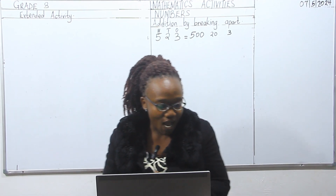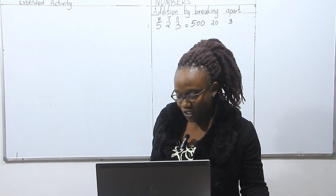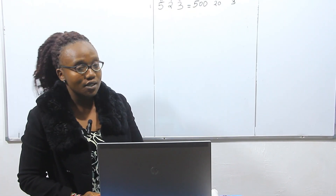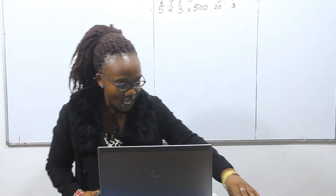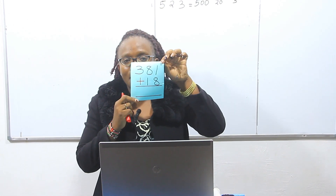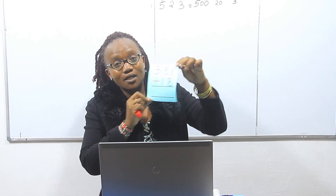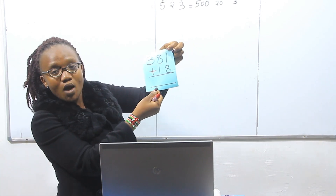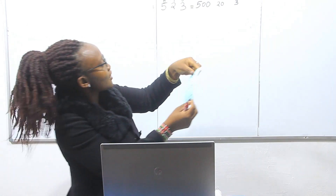In front of me I have cards with sums written on them. I'm going to pick a card and we are going to look at the number we will add by breaking apart. I picked my first card — the numbers shown are three hundred and eighty-one plus eighteen.